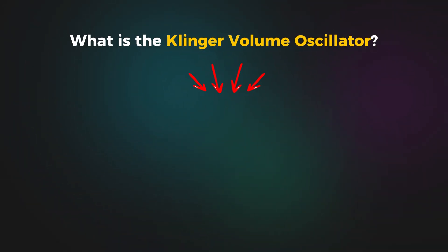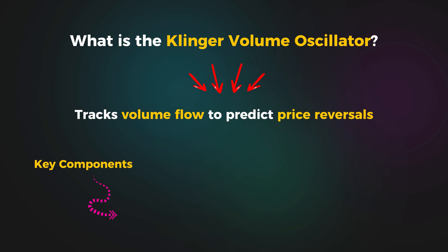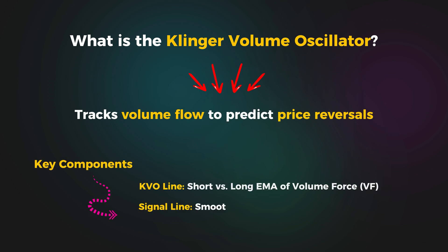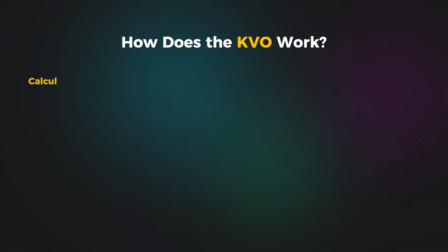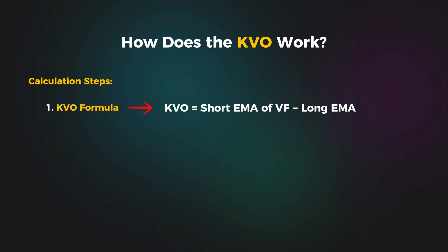The Klinger Volume Oscillator bridges price trends and volume flow, helping traders identify reversals with its three main components: the KVO line, signal line, and the histogram. It calculates momentum by comparing short and long-term volume trends.